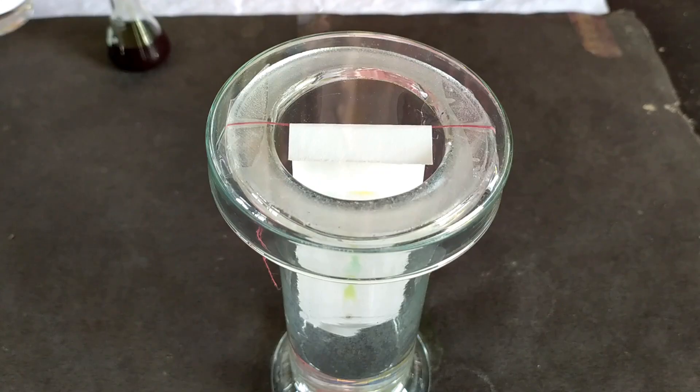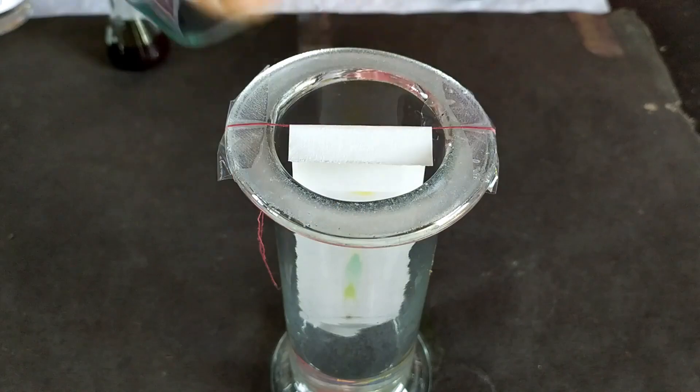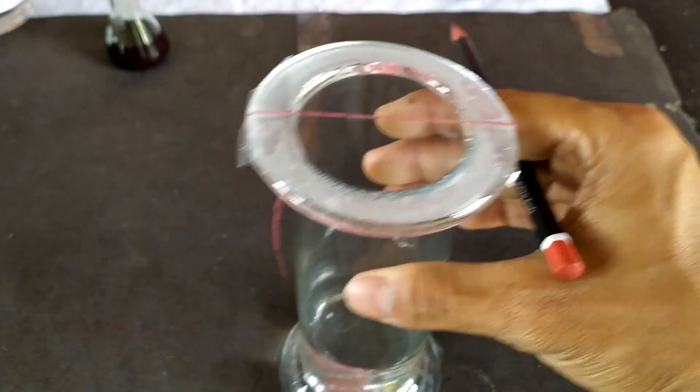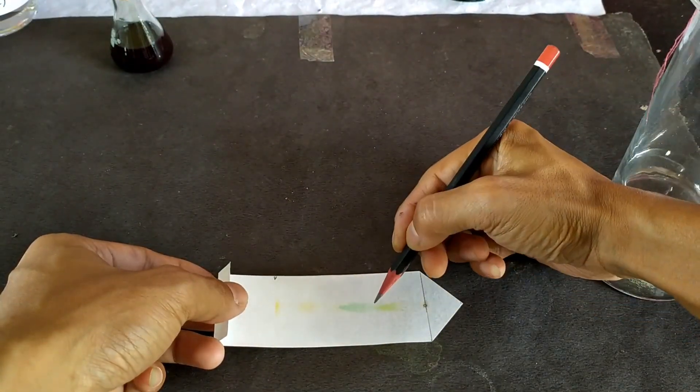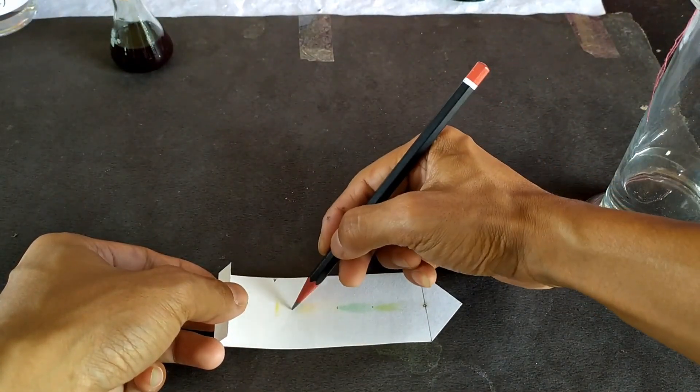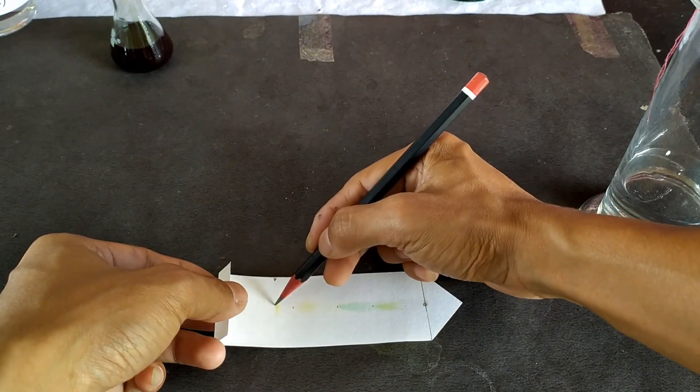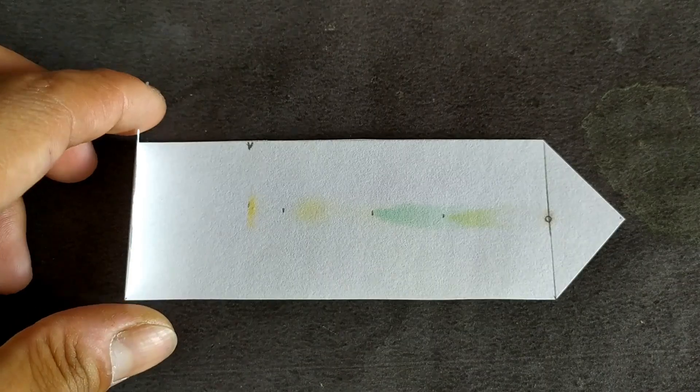Once the solvent reaches a desired level in the paper that isn't too high up but not too low either, remove the paper from the jar. Immediately mark the solvent front with a pencil and allow the paper to air dry. Mark the farthest distance traveled by each pigment on the paper. This is called the chromatogram.